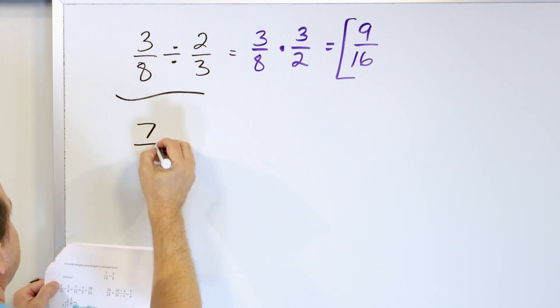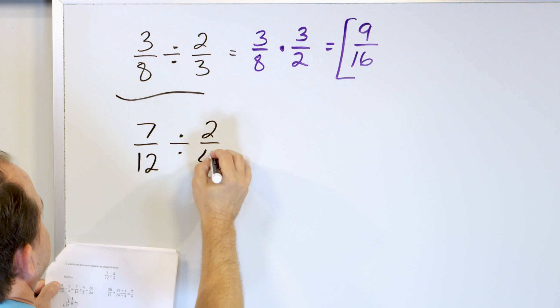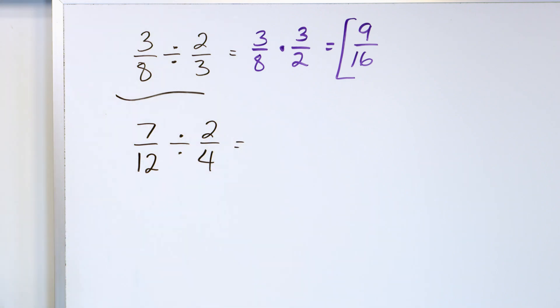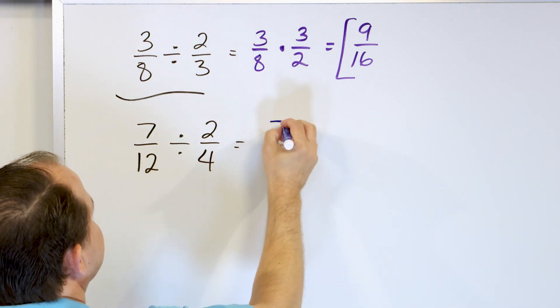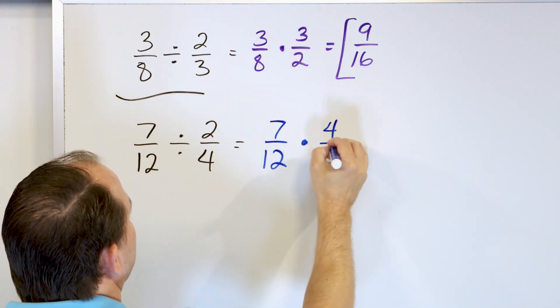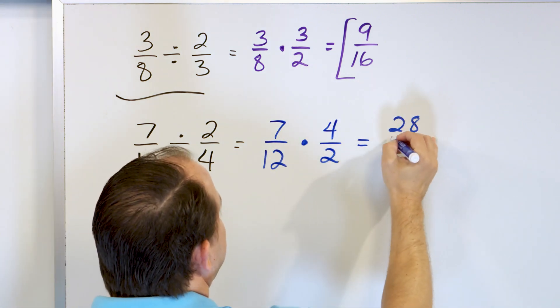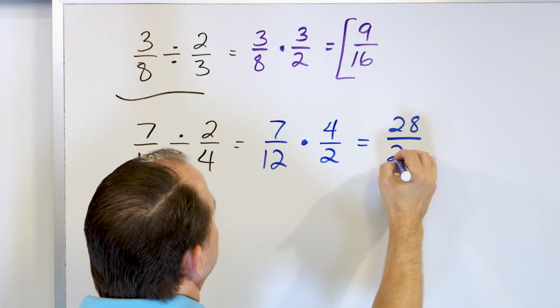Let's take a look at 7/12 and we'll divide it by 2/4. So 7/12, the first fraction, just leave it alone, change to multiplication. And this flips over to 4/2, so 4 over 2. 7 times 4 is 28 and 12 times 2 is 24.